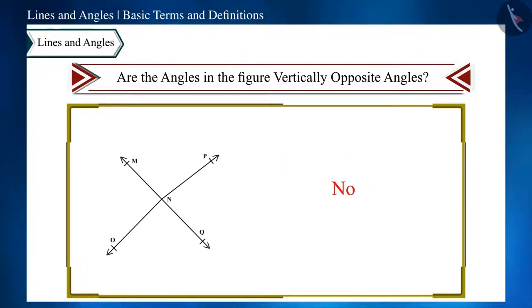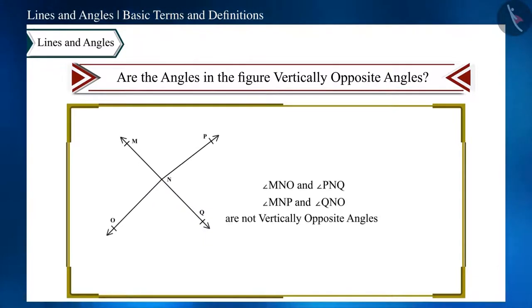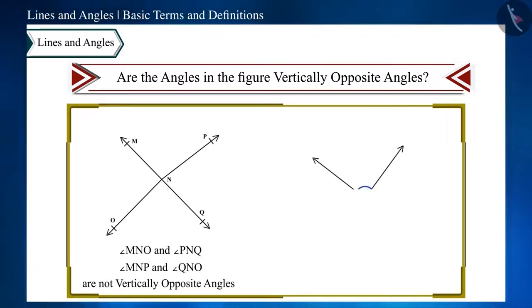No. If you are thinking that angle MNO and angle PNQ, and angle MNP and angle QNO are pairs of vertically opposite angles, then you are wrong because they are not vertically opposite angles. We get vertically opposite angles when two lines intersect each other in this way.